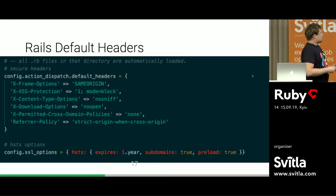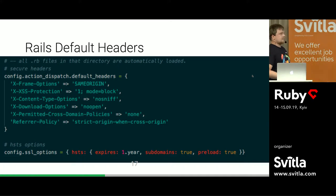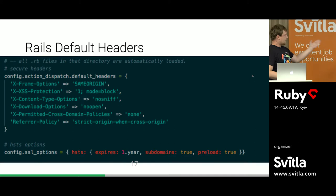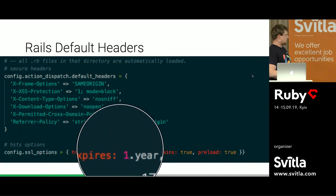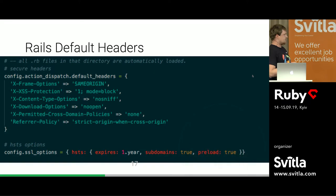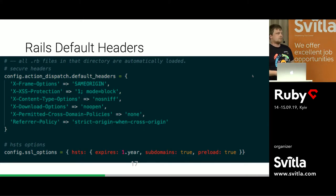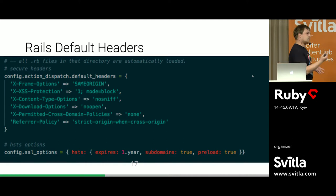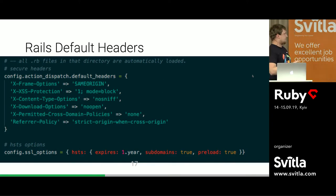About Rails: Rails provides many of these headers automatically. If you generate a new Rails project, you already see all these headers. You can also configure your HSTS content, expiration, subdomains, preload, and everything else. But if you have an old project and you update it, please check whether the Rails team has added new security headers that you also need to add to your configuration. Each time we update Rails applications, sometimes we discover they've added a new security header that we need to include.